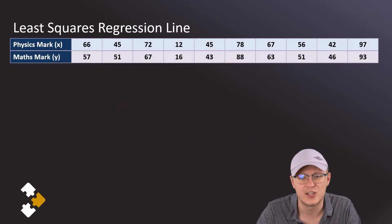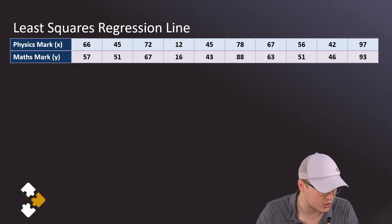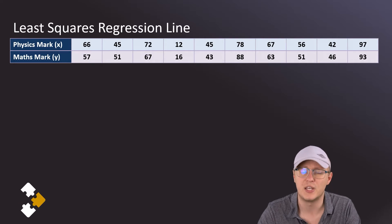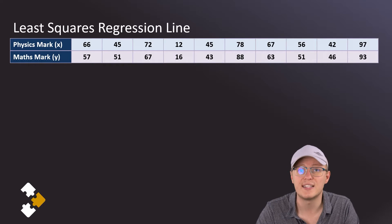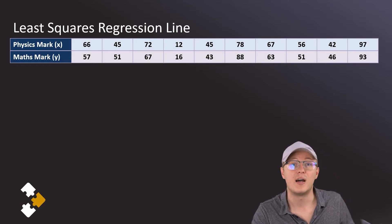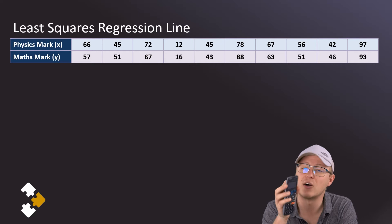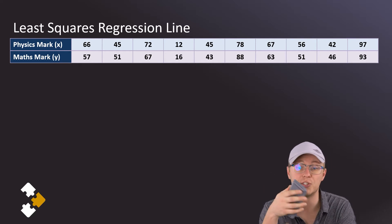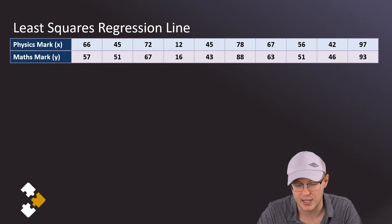So now let's look at how to calculate this least squares regression line. Now because we're using calculators in order to do this, you might have a different calculator to the one I have and in that case the procedure that you need to use might be a little bit different. But I'm going to use this Casio calculator here in order to calculate this least squares regression line.